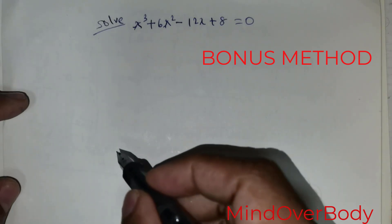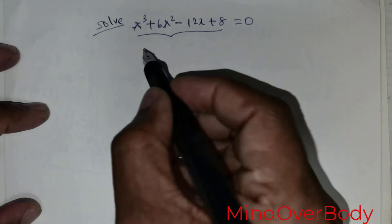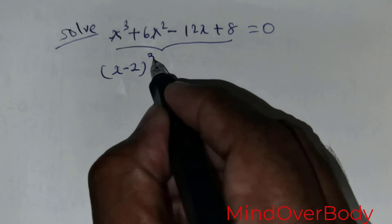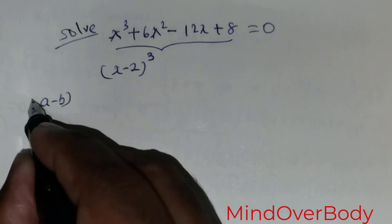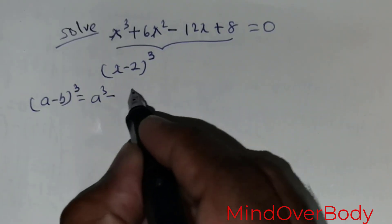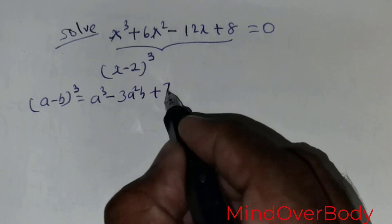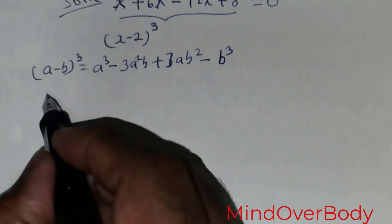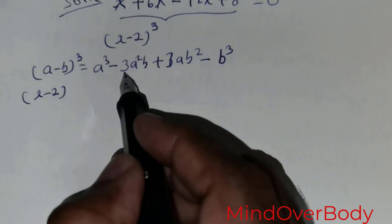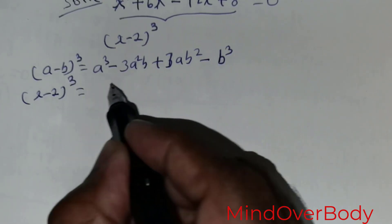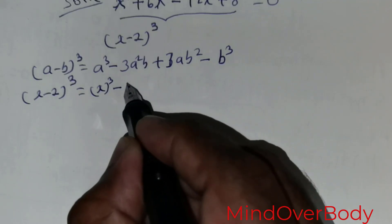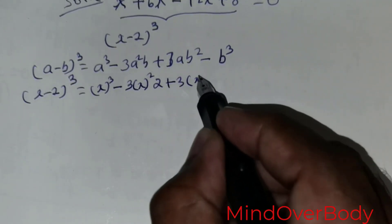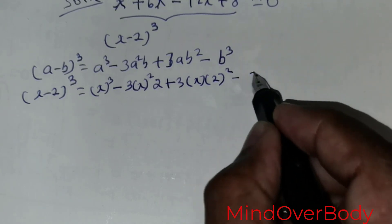This is method 5, using algebraic techniques. Given the equation, we rewrite it in terms of x minus 2 raised to the power 3 using the formula: a minus b cubed equals a cubed minus 3a squared b plus 3ab squared minus b cubed. Substituting a equals x and b equals 2: x minus 2 cubed equals x cubed minus 6x squared plus 12x minus 8.